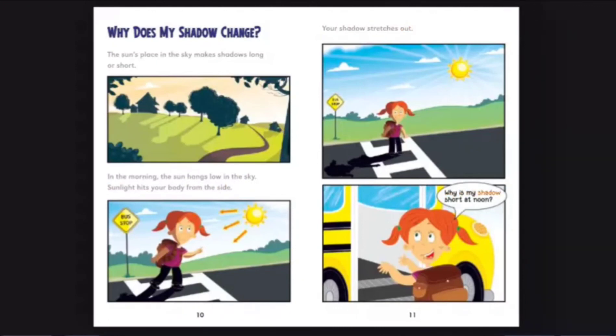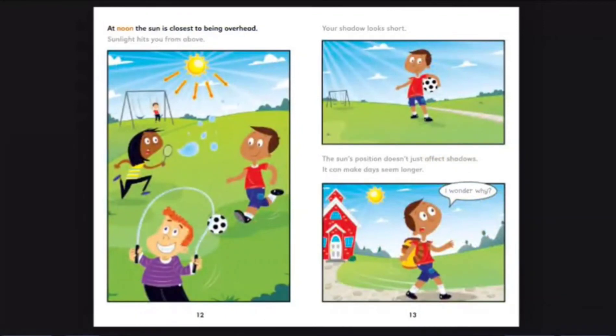Why is my shadow short at noon? At noon, the sun is closest to being overhead. Sunlight hits you from above. Your shadow looks short. The sun's position doesn't just affect shadows. It can make days seem longer. I wonder why.